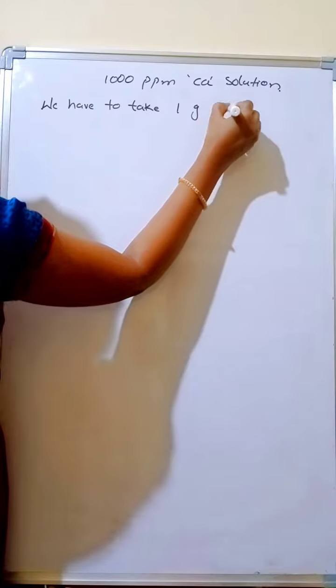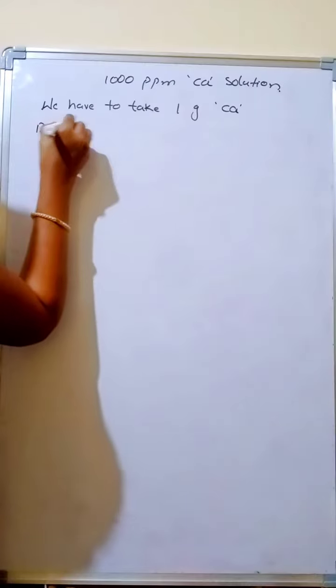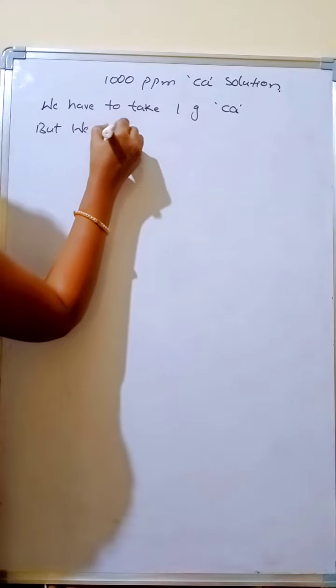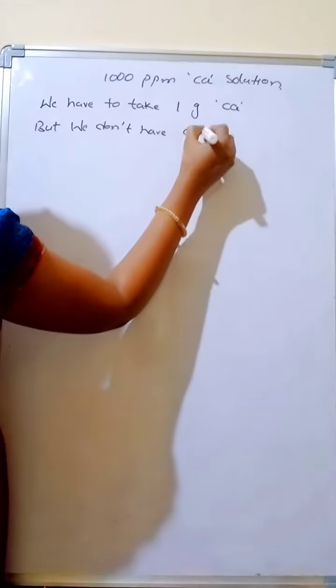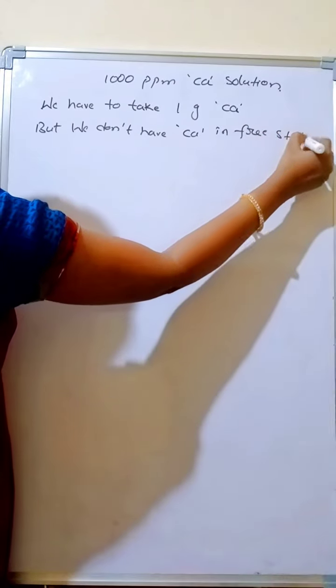To prepare 1000 ppm calcium, we have to take 1 gram of calcium in 1000 ml of water, but we don't have calcium in free state to take 1 gram.